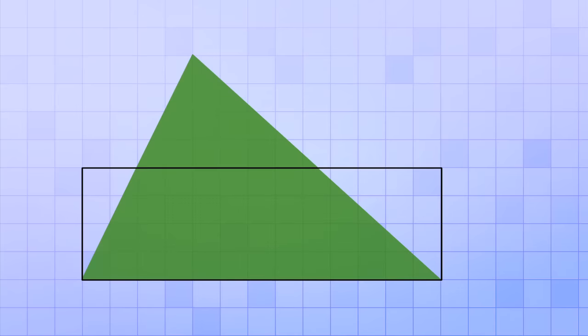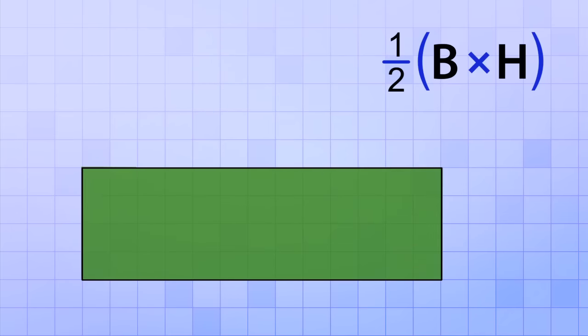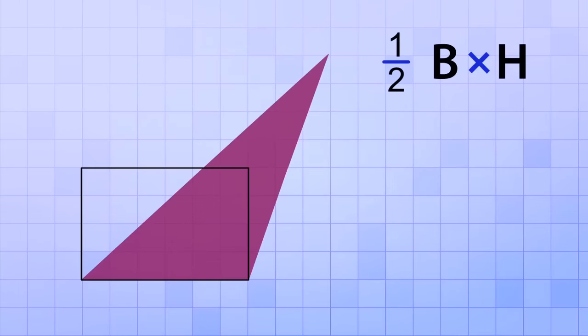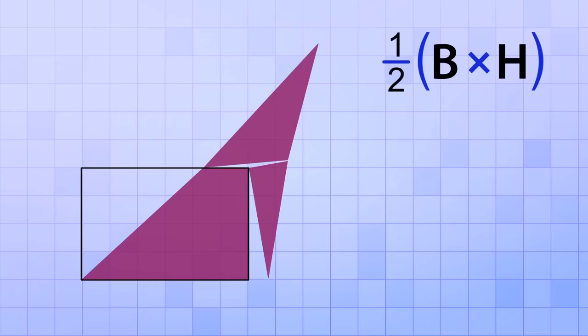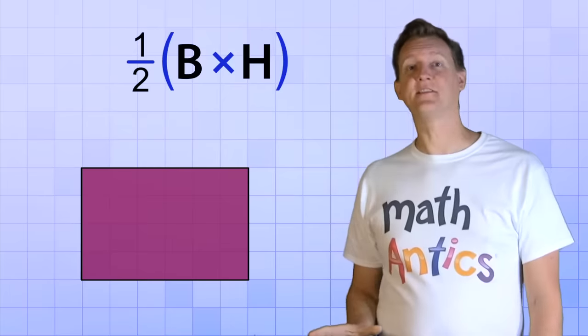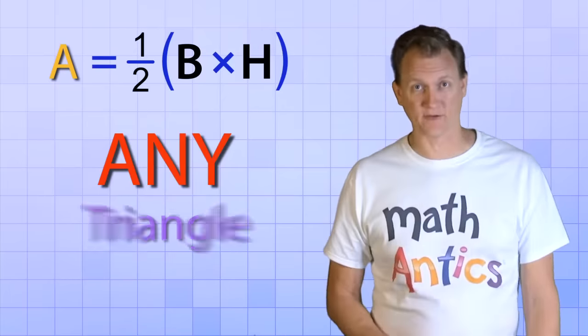No matter where the height line is, the formula for finding the area of any triangle is the same: Area equals one-half base times height. Here's an acute triangle — the box representing one-half its base times its height fits the triangle perfectly. Here's an obtuse triangle with a box that's one-half its base times its height, and again, if we cut up the triangle it fits perfectly inside the box. Now you can see how area equals one-half base times height works for any kind of triangle.